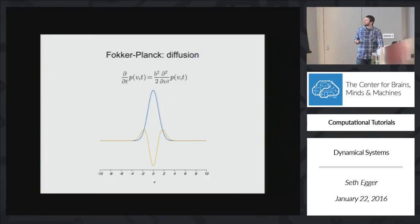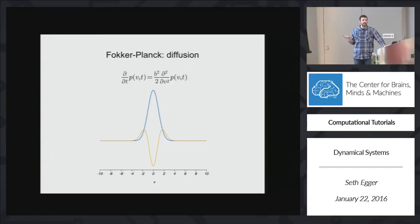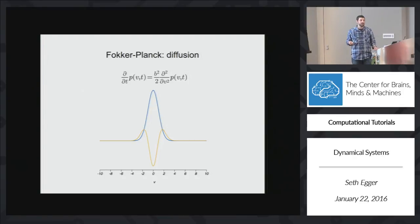If you take this out to infinity, you have a variance that is infinity as well, which means a uniform distribution. So this is just the diffusion part of the process.